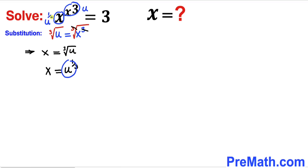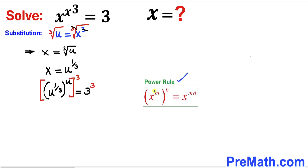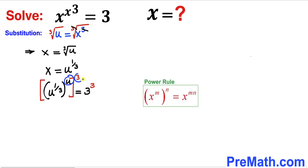So I can write u power 1 third, and therefore this equation can be written as u power 1 third, whole power u, equals to 3. Now we are going to manipulate this equation by taking a cube on both sides. Recalling the power rule of exponents — if we have x power m, then power n, we can write x power m times n. So therefore we multiply out u and 3, giving us u power 1 over 3, then power 3 times u, equal to 3 power 3.